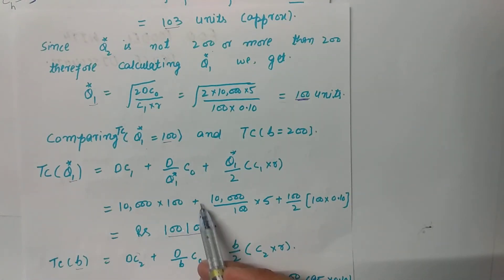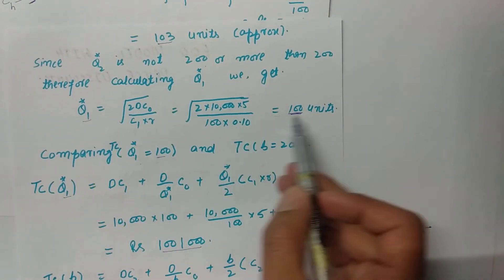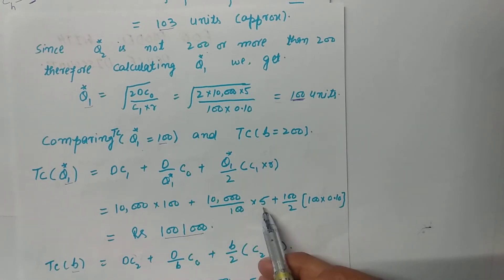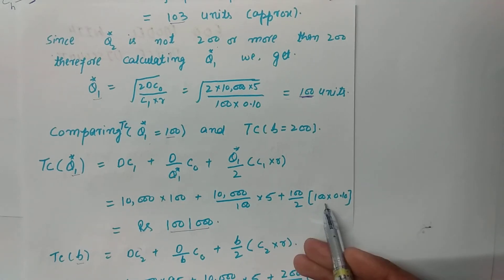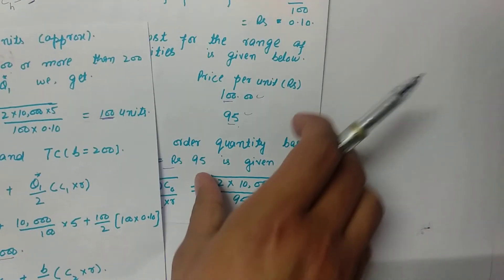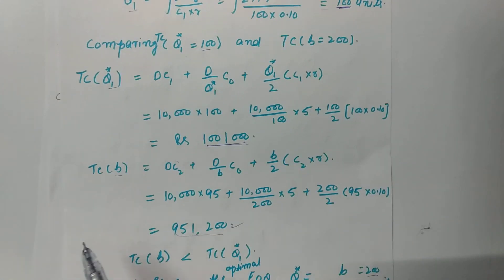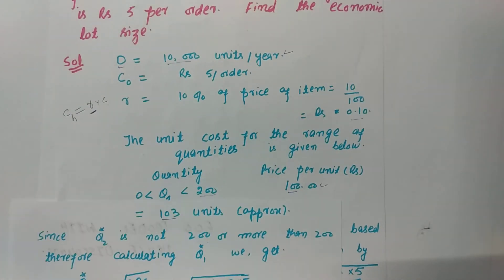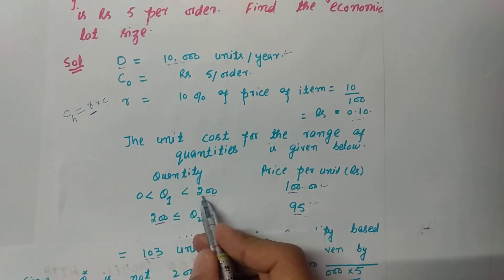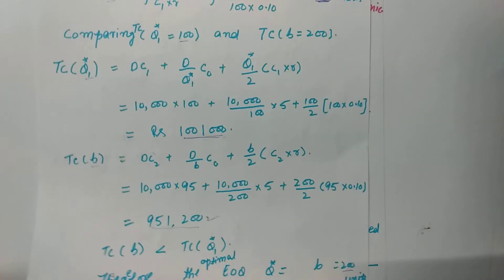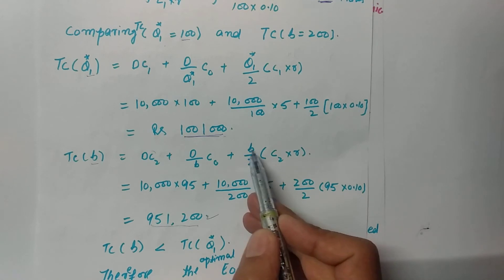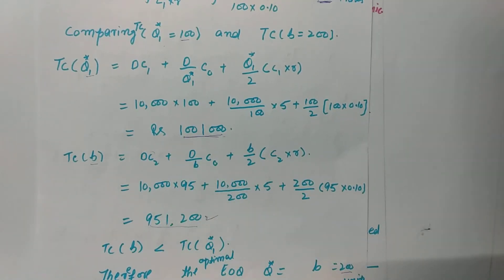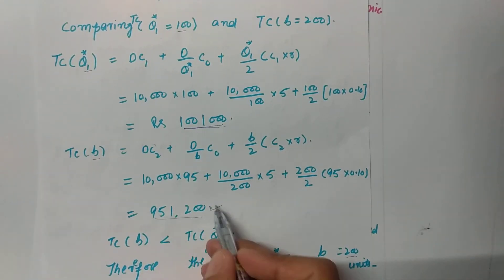After substituting all values into the formula, we obtain the total cost at Q*1 = 100 units. We then compute the total cost at B1 = 200 units using the same formula but with quantity = 200 and price C2 = 95 rupees. After calculating, we get the respective total cost values for comparison.